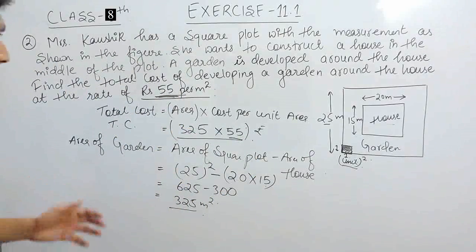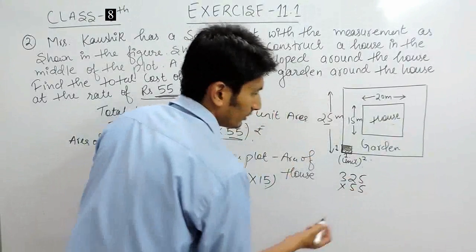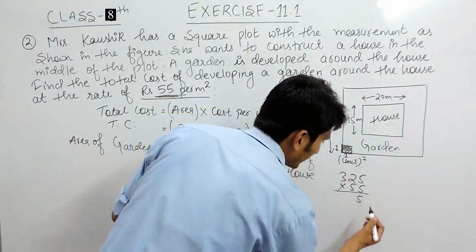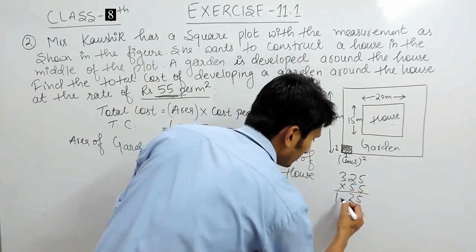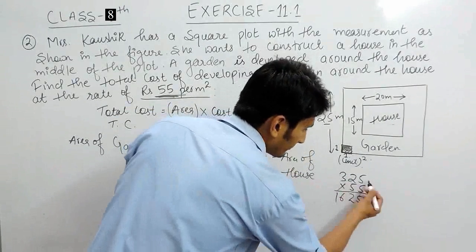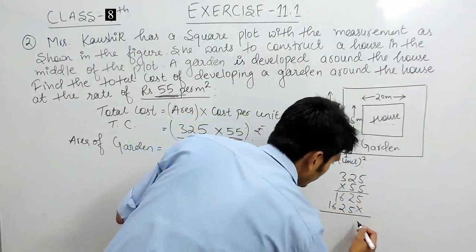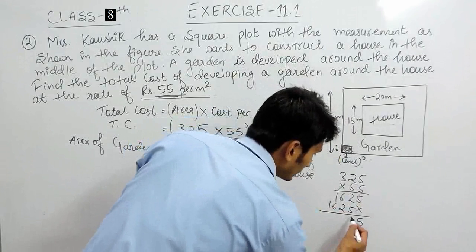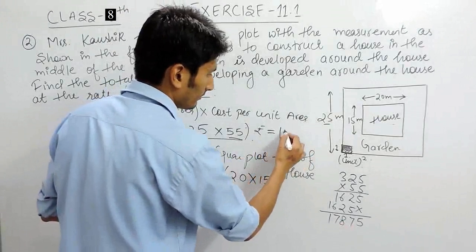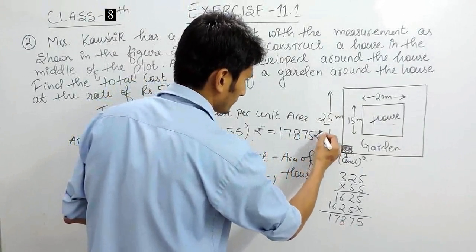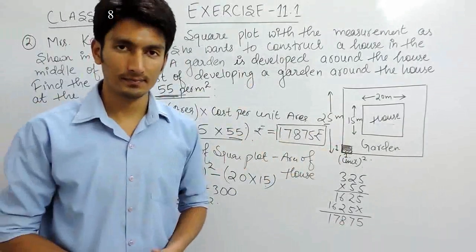Now multiplying the garden area by the cost per unit area: 325 × 55. Working through the multiplication: 325 × 5 = 1625, and 325 × 50 = 16250. Adding these gives 17,875. So the total cost for developing this garden is ₹17,875.